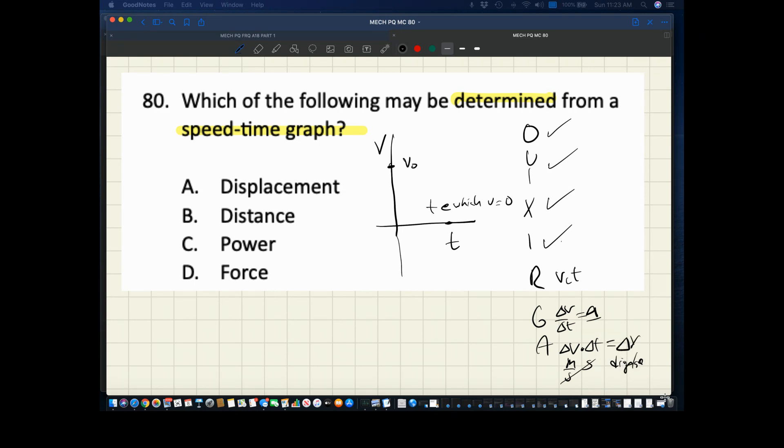So displacement, that looks like our answer right away. Distance and displacement. That's a curious point here because if this were a speed graph, well then speed times time is distance. Power and force are out.